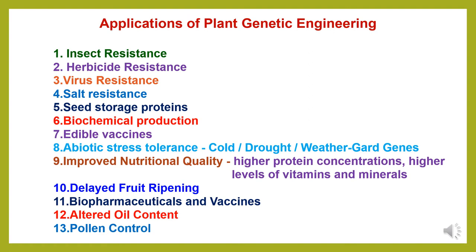Now we study the applications of plant genetic engineering in agriculture. It is playing a very important role in developing various traits and characteristics in crop plants, like: first, insect resistance; second, herbicide resistance; third, virus resistance; fourth, salt resistance; fifth, seed storage protein induction; sixth, biochemical production in plants; seventh, edible vaccines creation; eighth, abiotic stress tolerance characteristics like cold, drought tolerance and weather-guard gene induction; ninth, improved nutritional quality with higher protein concentrations and higher levels of vitamins and minerals; tenth, delayed fruit ripening; eleventh, bio-pharmaceuticals and vaccines production; twelfth, altered oil content in different crops; and thirteenth, pollen control.